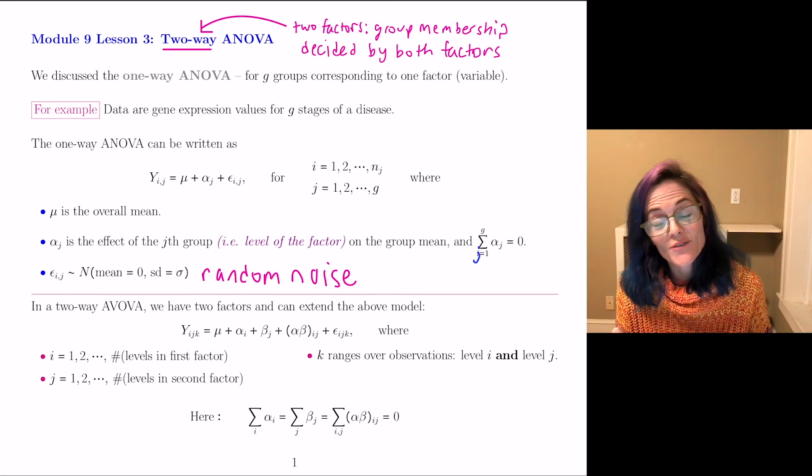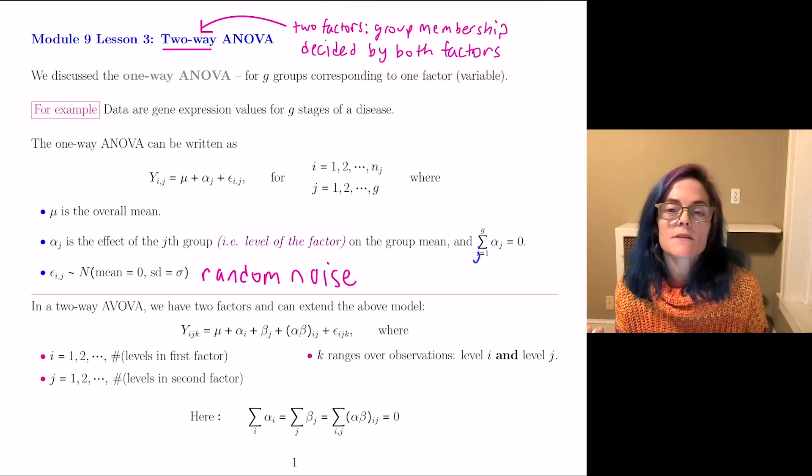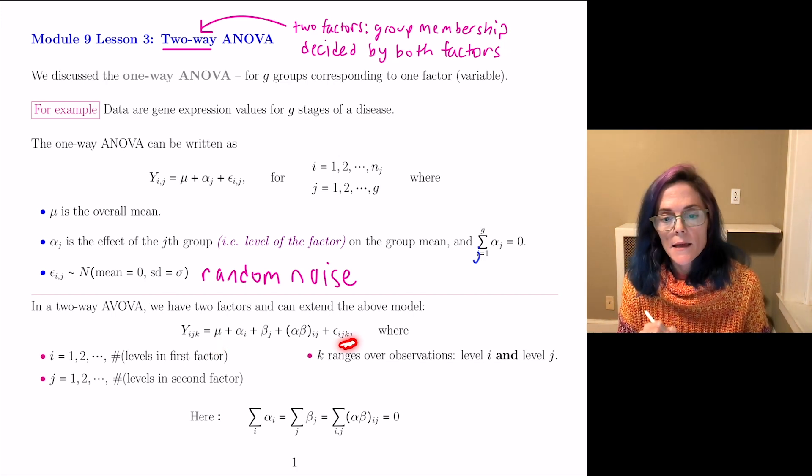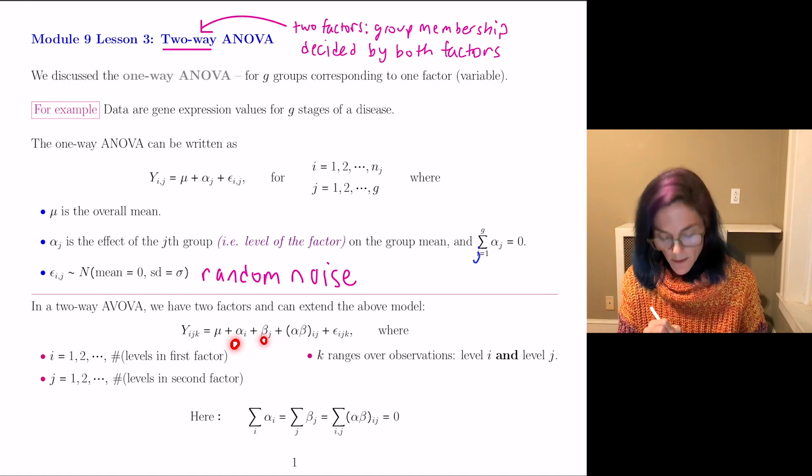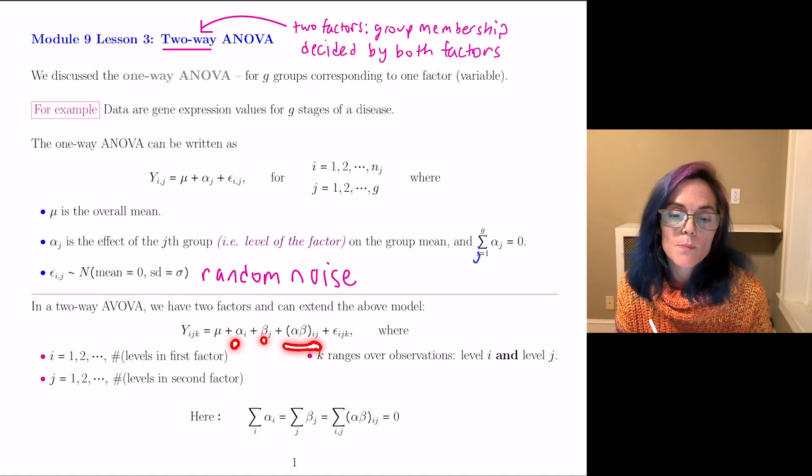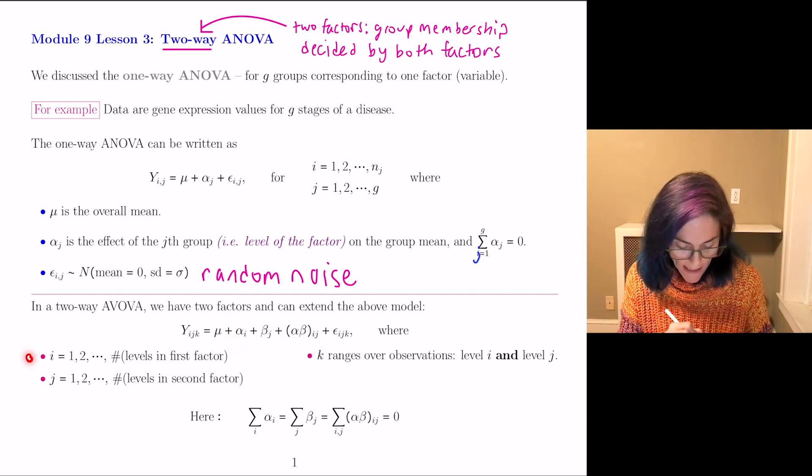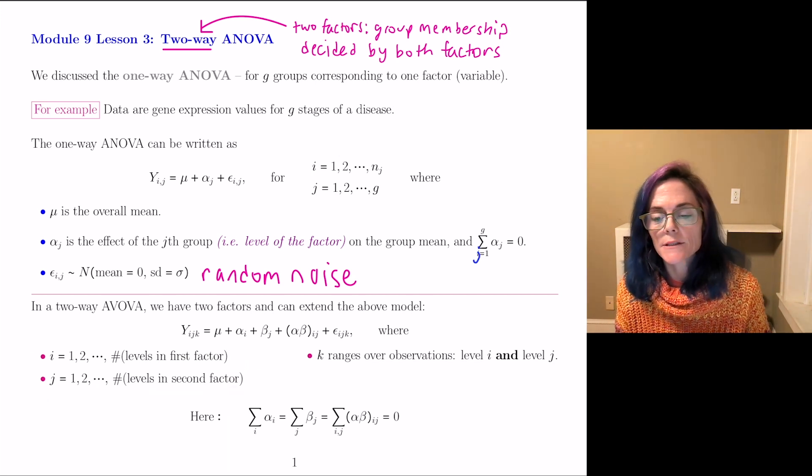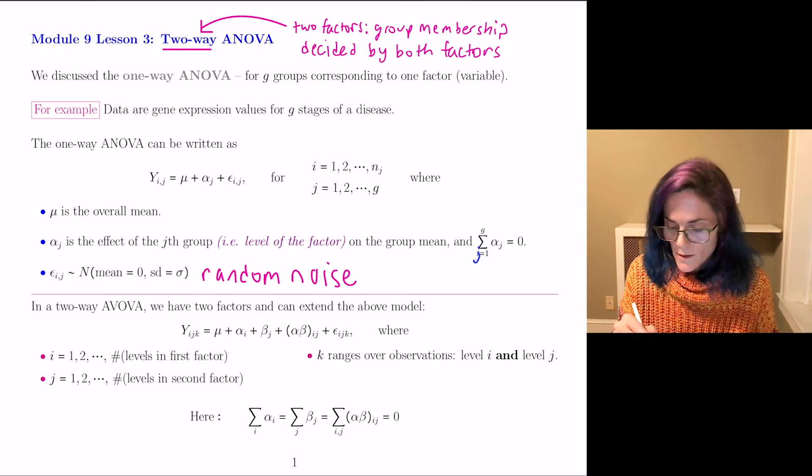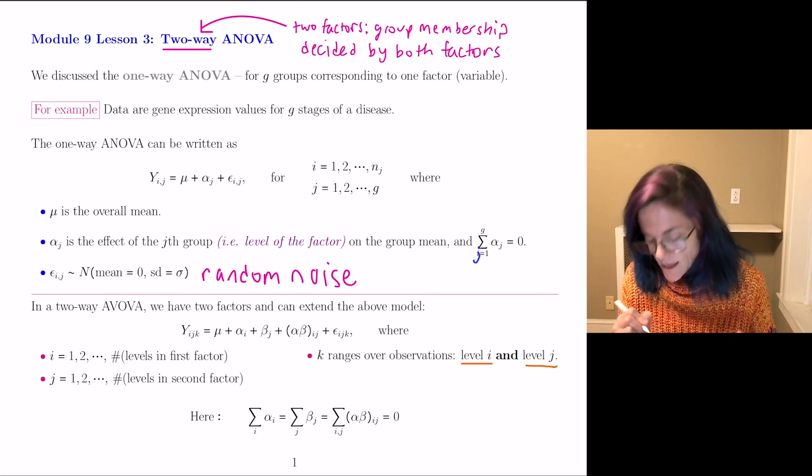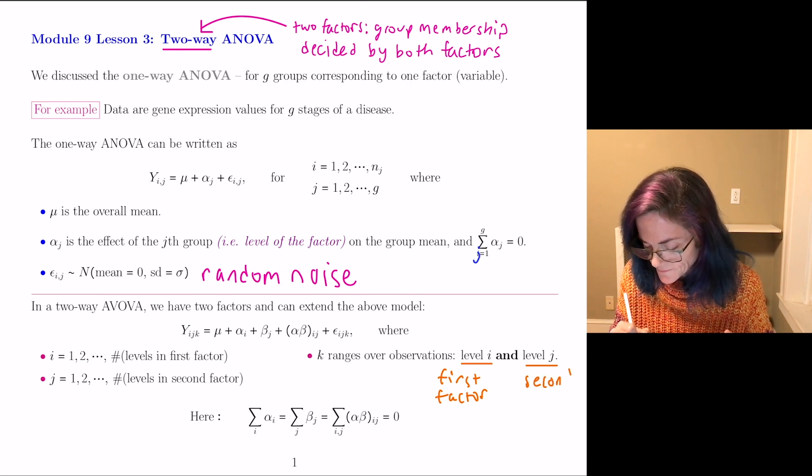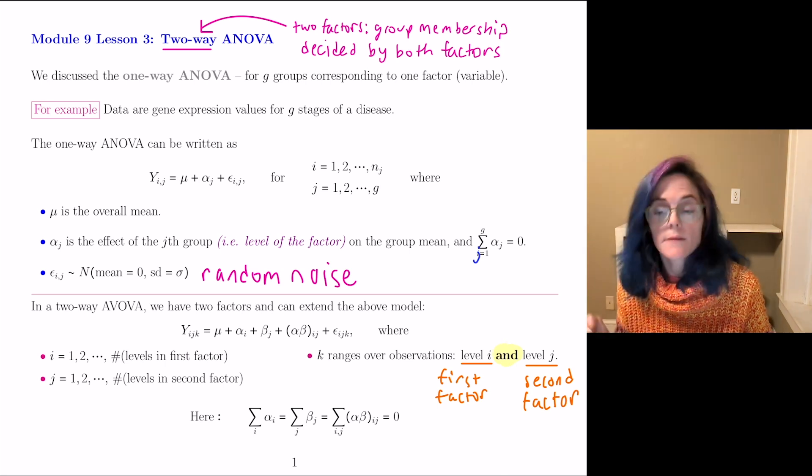So in a two-way ANOVA, we have two factors. And as I mentioned at the start, the group membership is decided by both factors. So we can extend this model as follows. We have this overall mean, we have this noise, but then we have α_i + β_j + this. We're writing this as (αβ)_ij. Now, the i's run through the levels of the first factor. The j's run through the levels of the second factor. And then the k ranges over all observations that are in level i for the first factor and level j for the second factor.